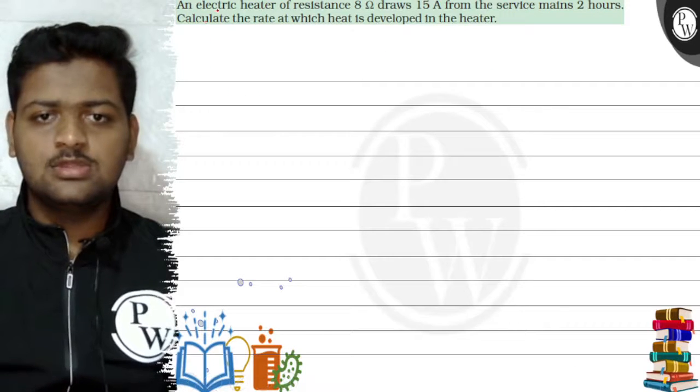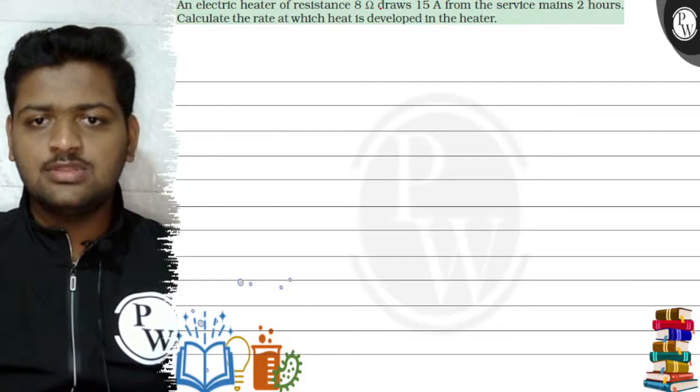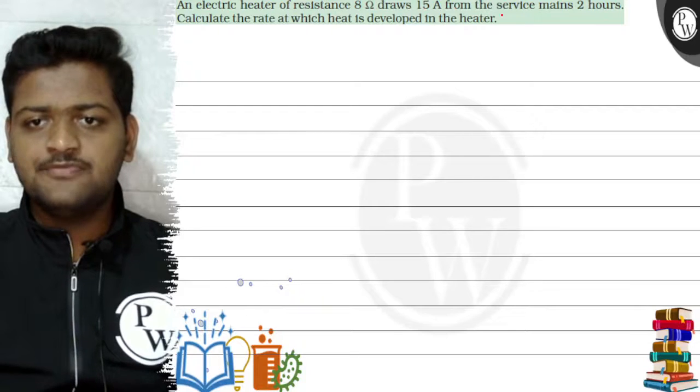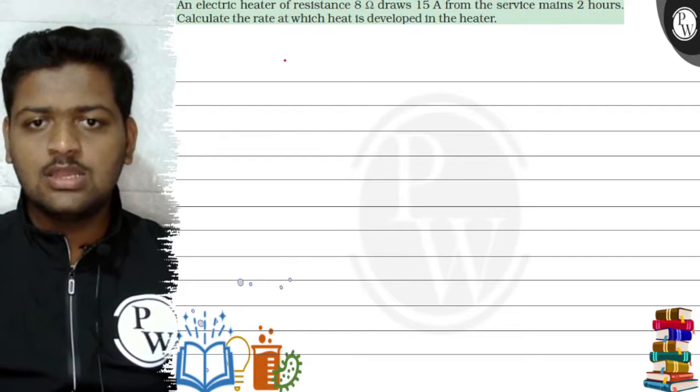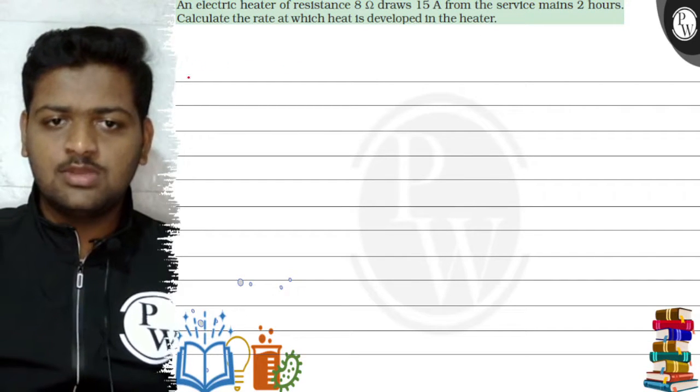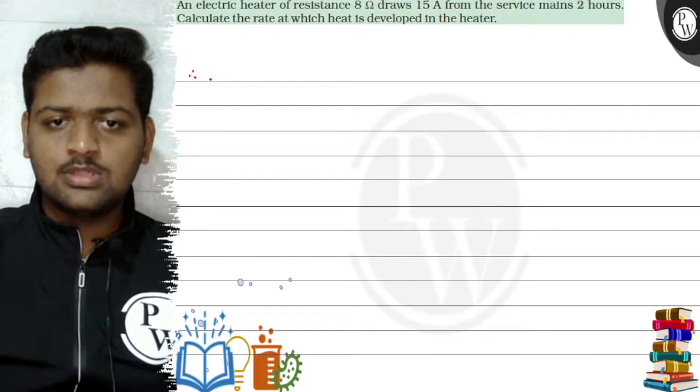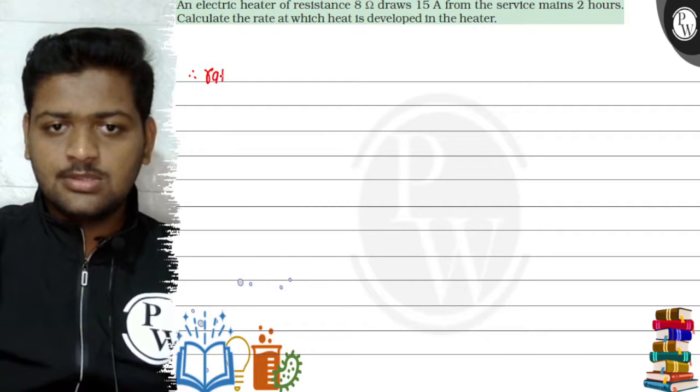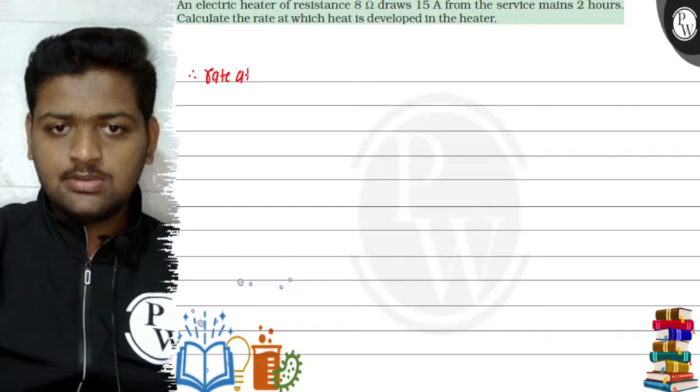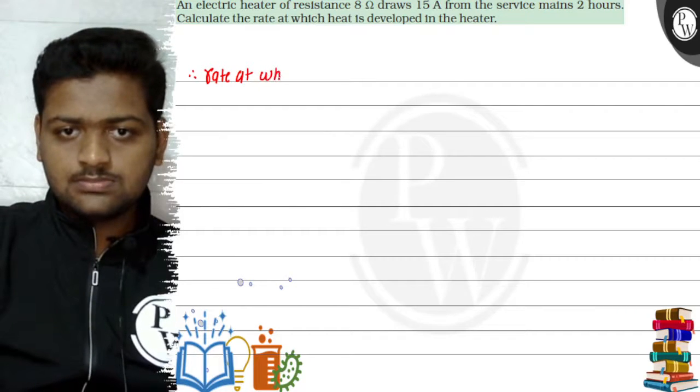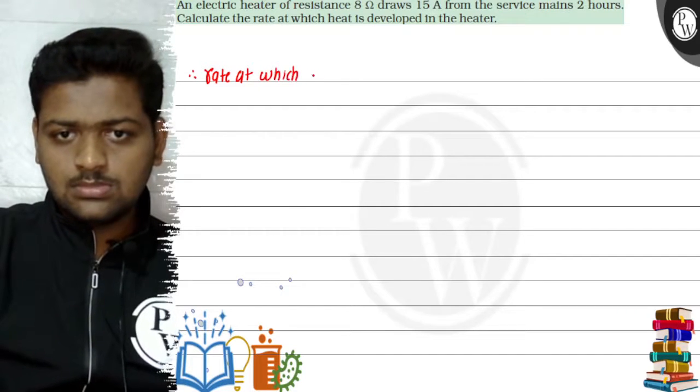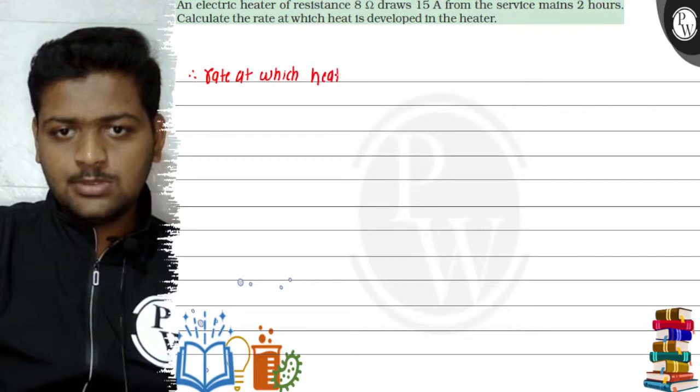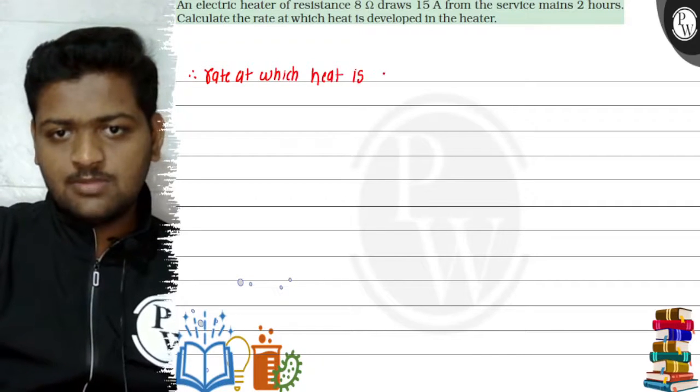Hello, let's see this question. An electric heater of resistance 8 ohms draws 15 ampere from the service mains for 2 hours. Calculate the rate at which heat is developed. So here in this question they are asking us rate at which heat is developed.